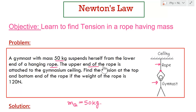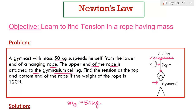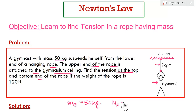The upper end of the rope is attached to the gymnasium ceiling. We have to find the tension at the top and bottom end of the rope, given that the weight of the rope is 120 N.